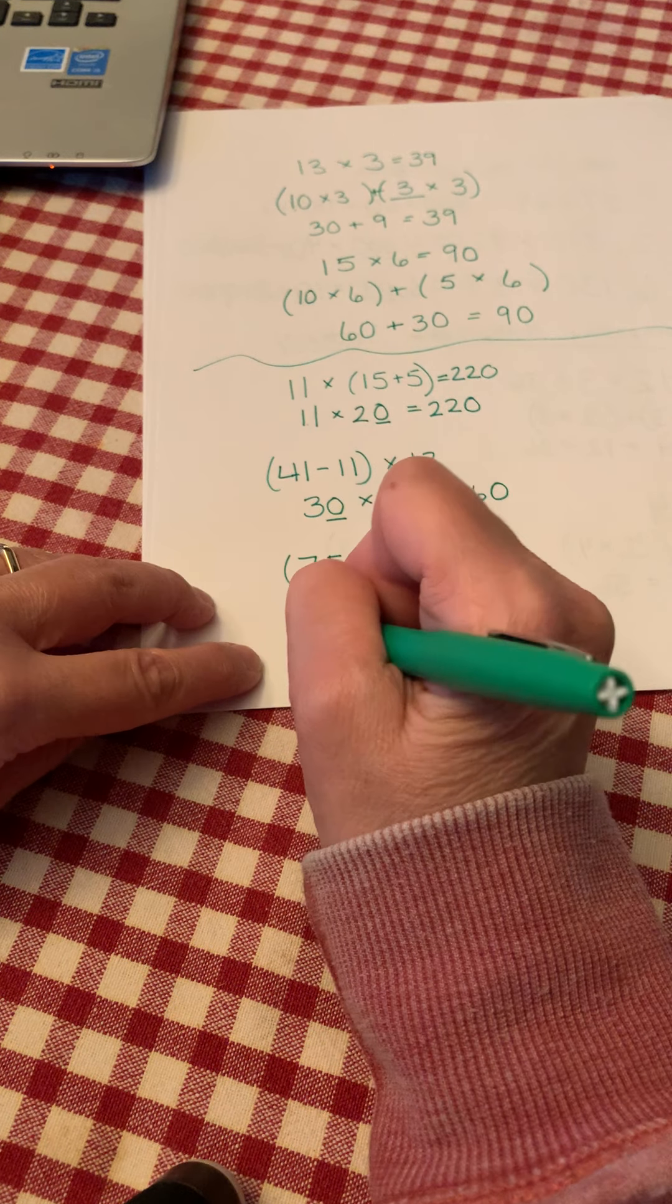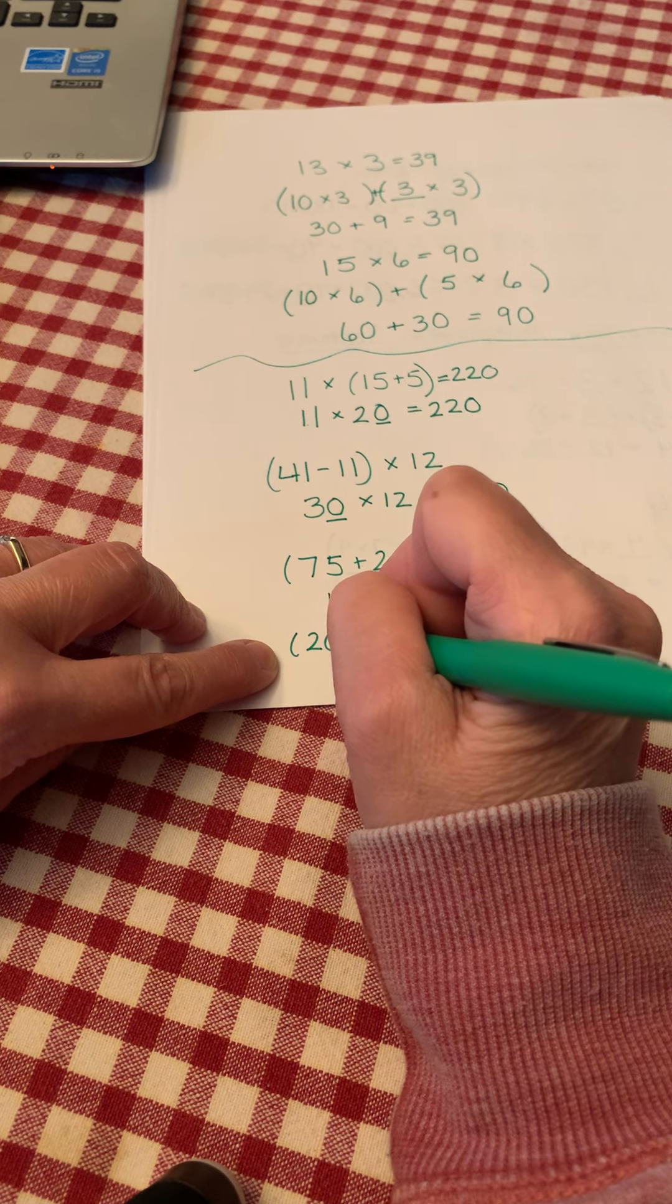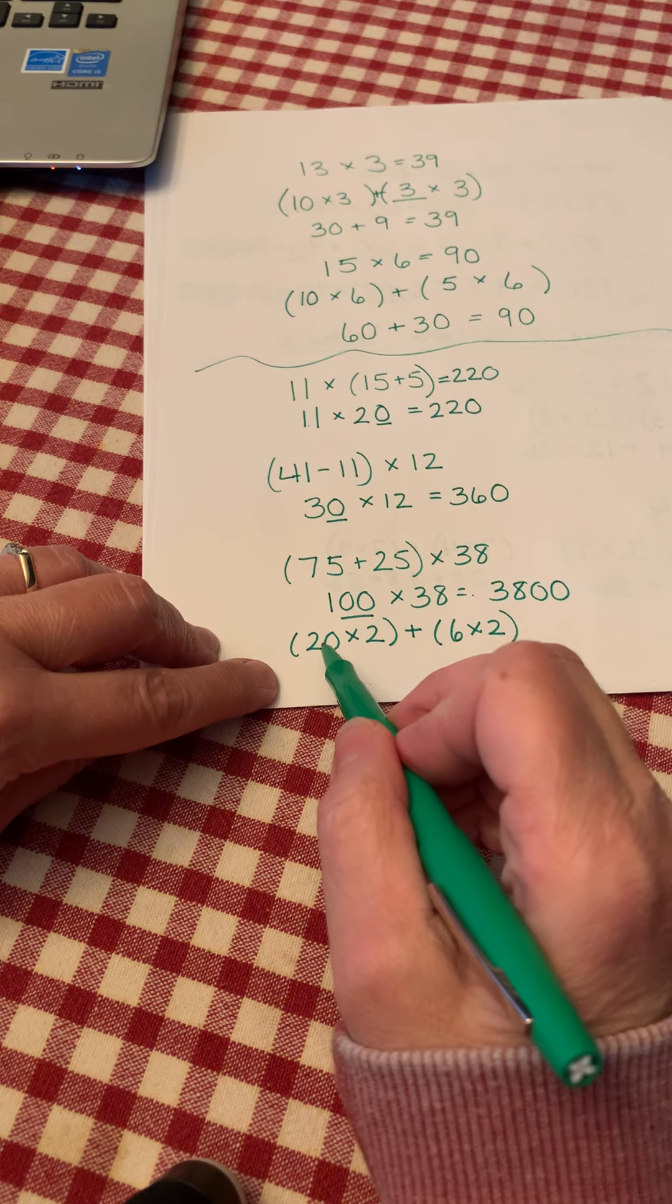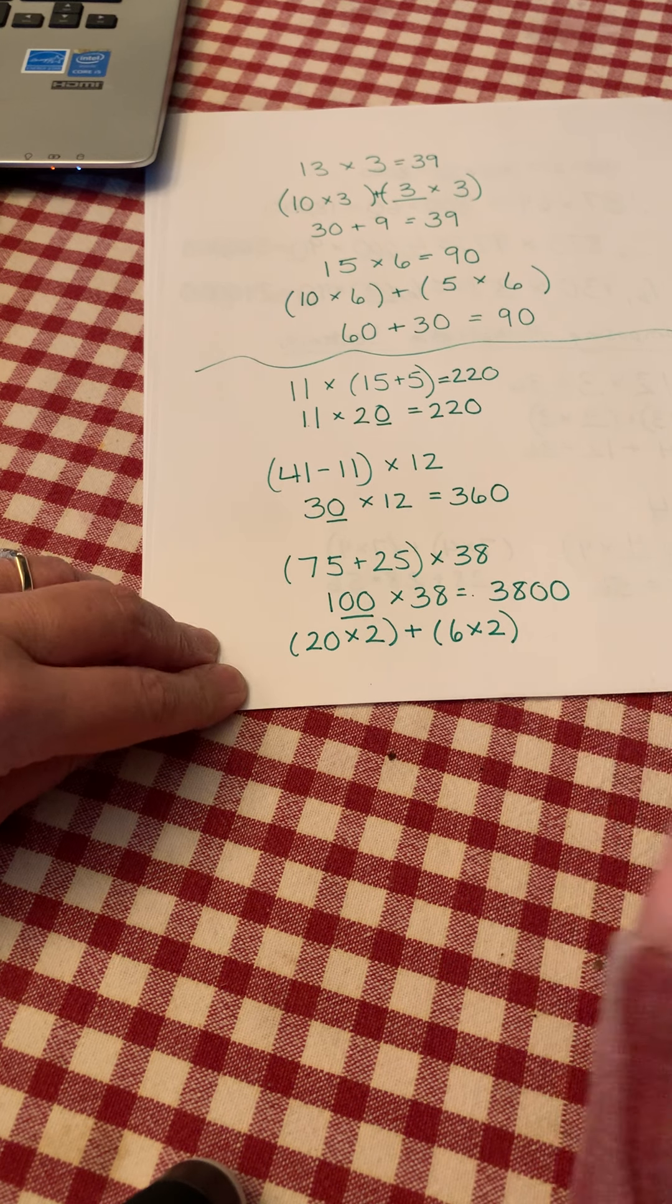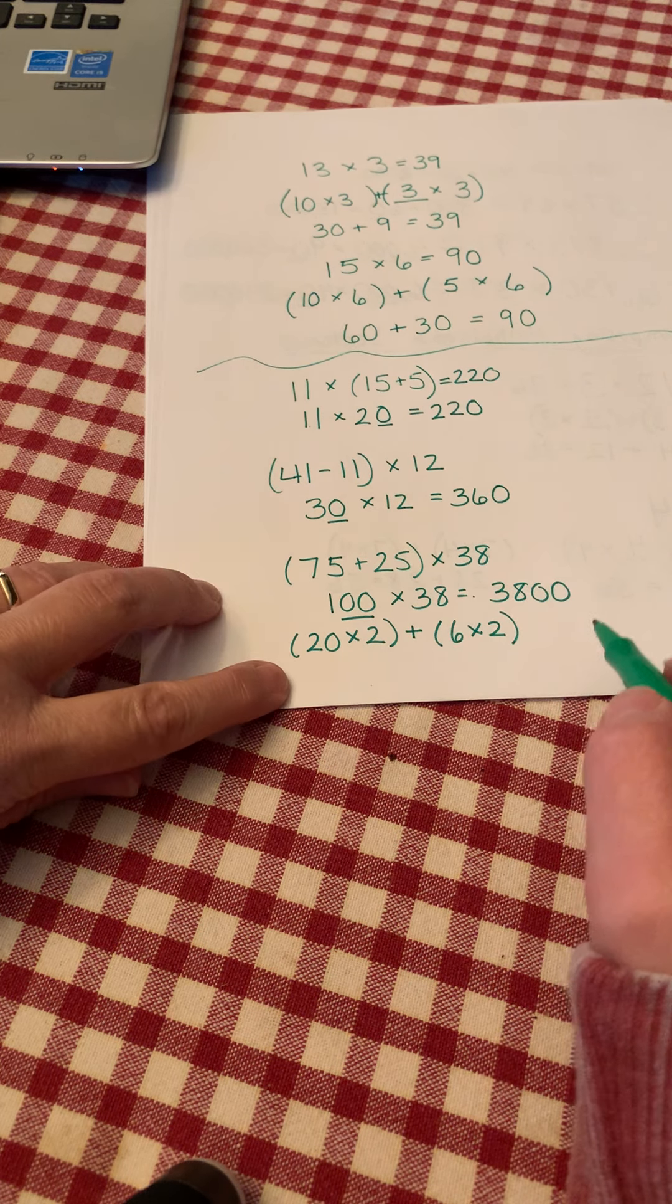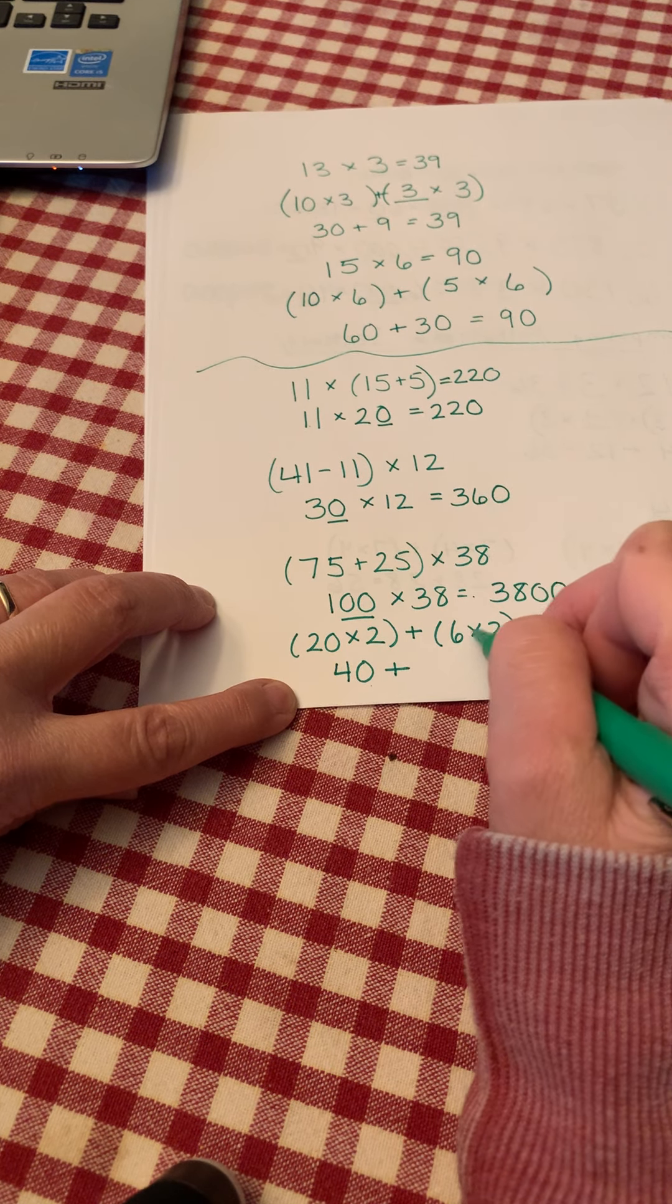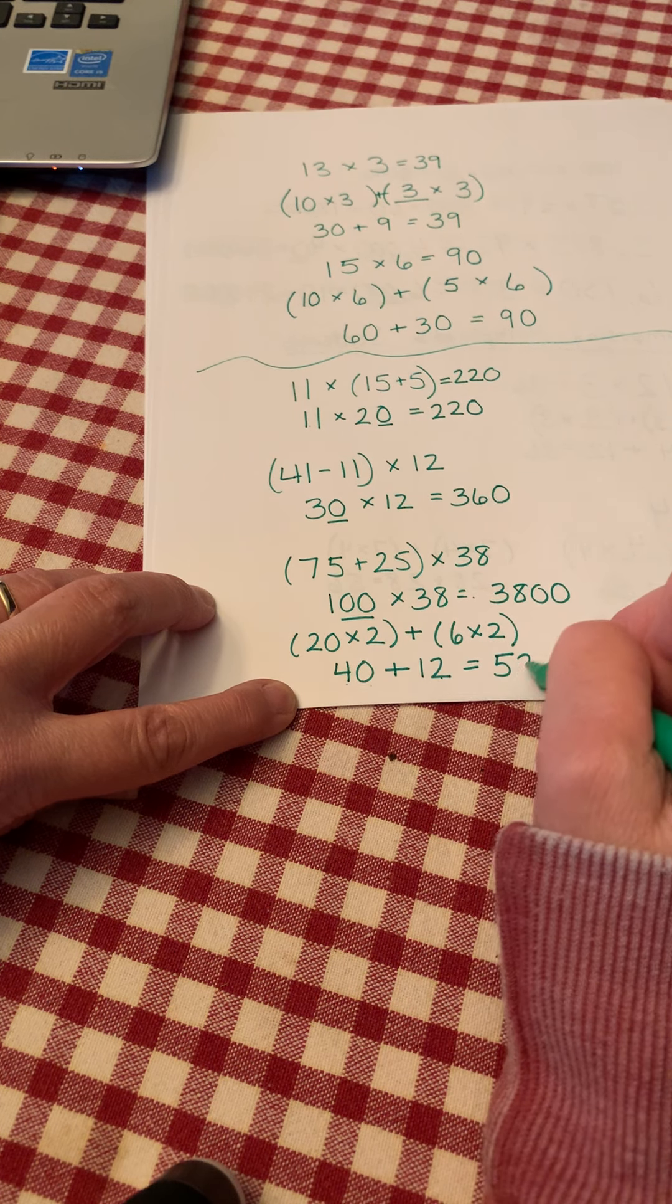Okay, last problem for our fluency section. 20 times 2, so the product of 20 and 2 plus the product of 6 and 2, or we could say the sum of 22's and 6 2's. Press pause, solve this problem, and press play to check your answer. Okay, for this one we did 20 times 2 equals 40 plus 6 times 2 is 12. 40 plus 12 is 52.